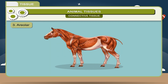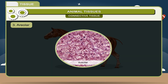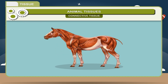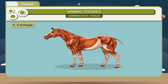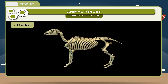3. Areolar: It binds the skin to the underlying parts in animals. 4. Adipose: A fibrous tissue which contains a large number of cells filled with fats. This tissue acts as a shock absorber and also forms an insulating layer. 5. Cartilage: These are tough elastic tissues that are found in the nose, throat, ear, and in other parts of the body, and form most of the skeleton in infancy.